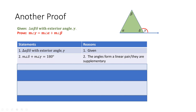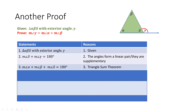Moving on to the third statement in our proof, we also know from what we've learned in the past that if we add all the angles inside the triangle, they should equal 180 degrees by the triangle sum theorem. So in step three, we have an equation that says the sum of all angles inside the triangle equals 180 degrees.